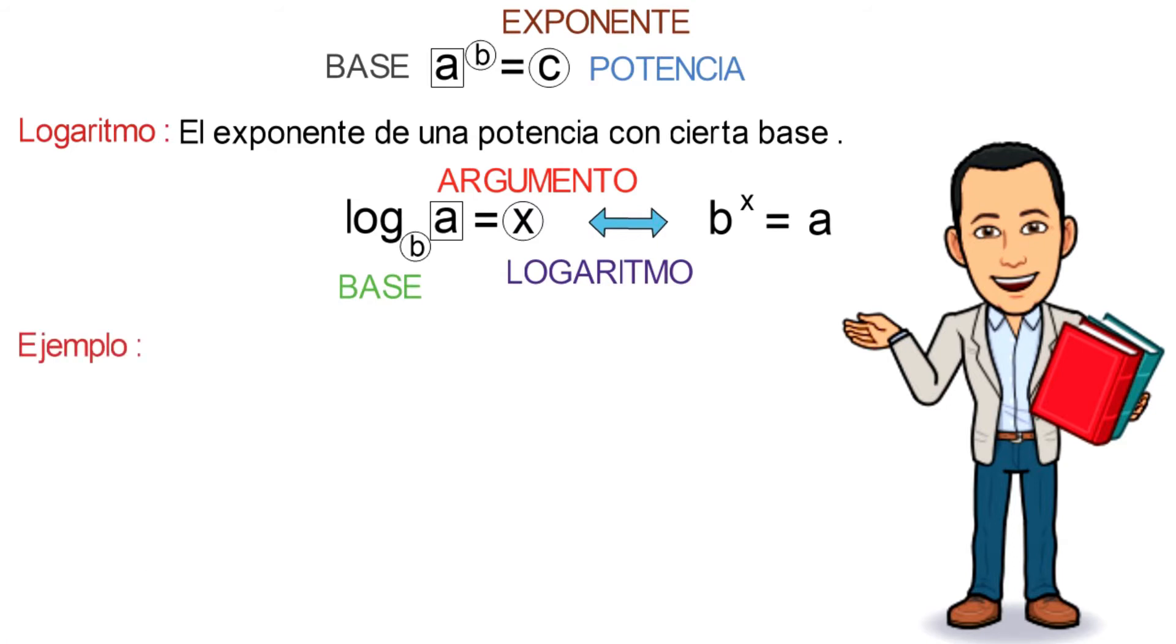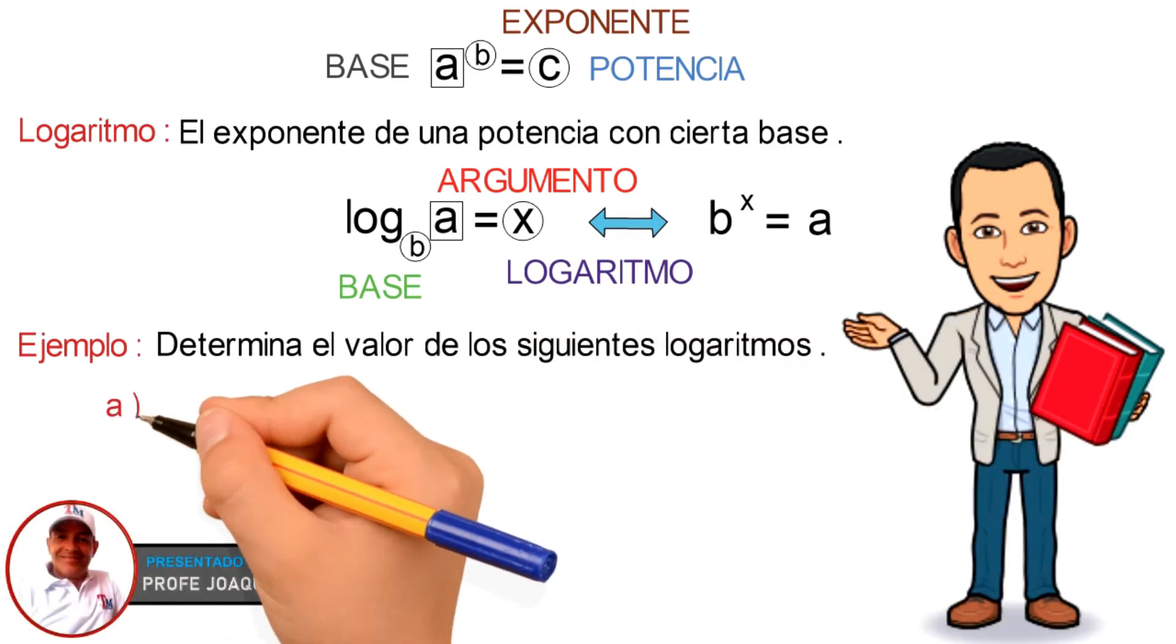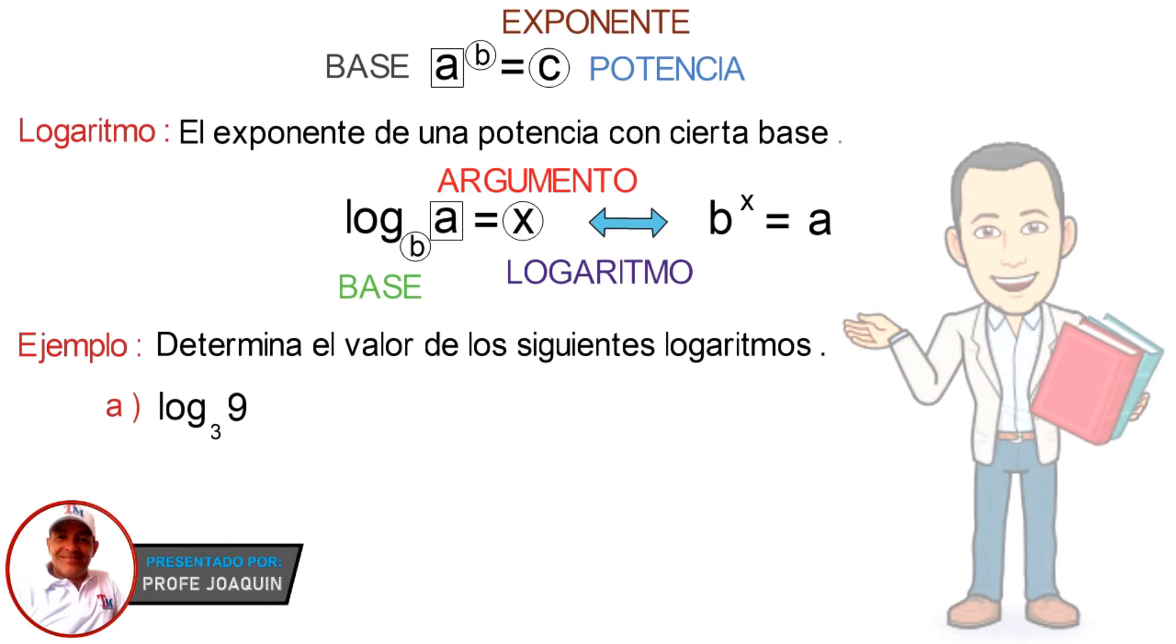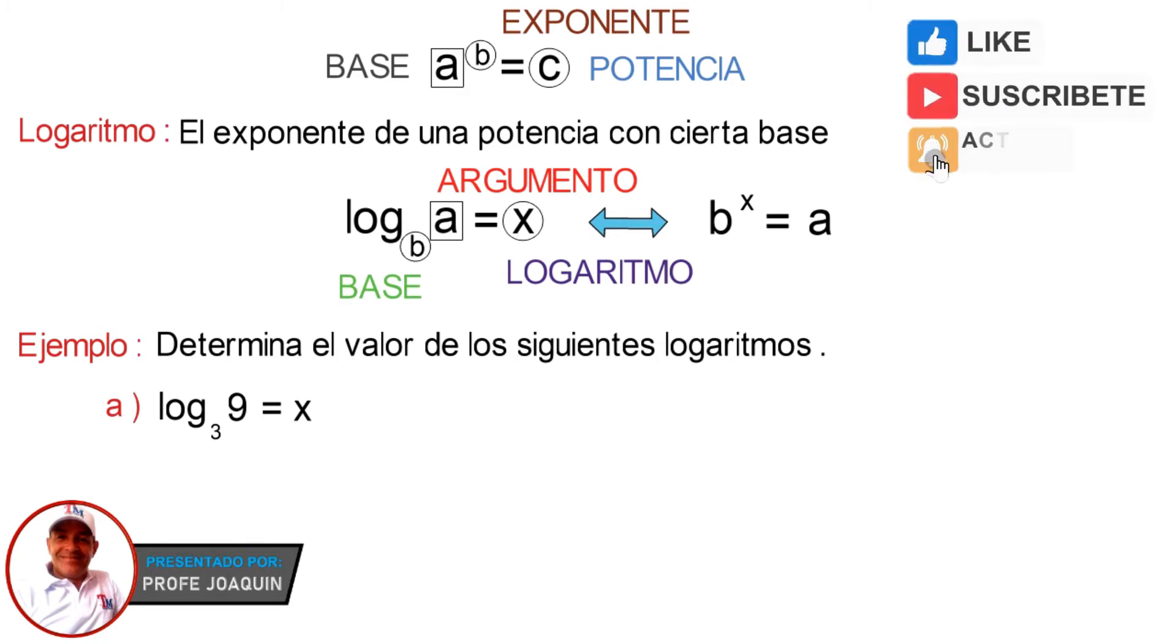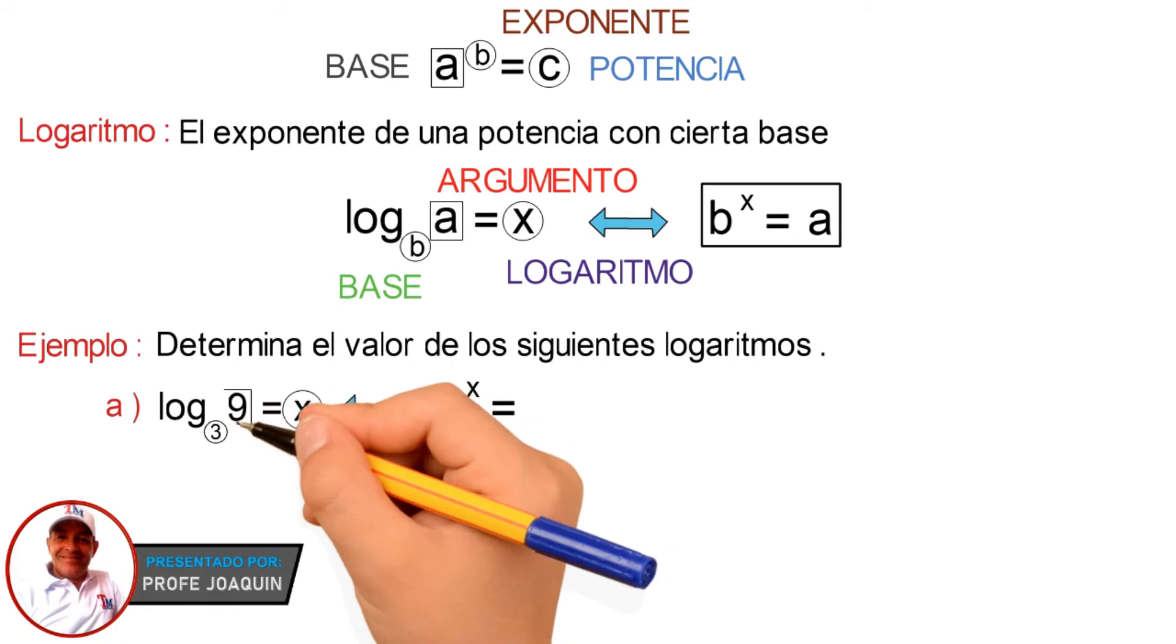Veamos algunos ejemplos. Determina el valor de los siguientes logaritmos. Literal A: logaritmo de 9 en base 3. Este logaritmo se calcula determinando el valor de X, y para ello utilizaremos la expresión B elevado a la X es igual al elemento A. Luego, esta es equivalente, la base 3 elevado a la X es igual al argumento 9.